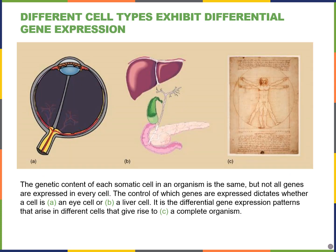All somatic cells in the body pretty much contain the same DNA, but cells look different from one another because they express different genes — they exhibit differential gene expression.